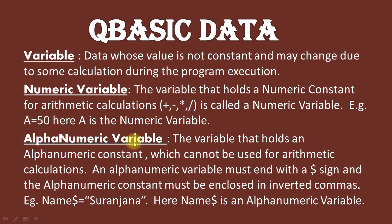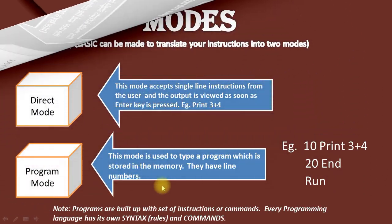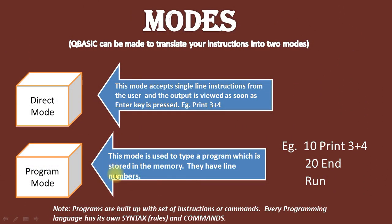An alphanumeric variable holds an alphanumeric constant which cannot be used for arithmetic calculations. An alphanumeric variable must end with the dollar sign ($), and the alphanumeric constant must be enclosed in inverted commas. For example, NAME$ = "Suranjana" — here NAME$ is an alphanumeric variable.